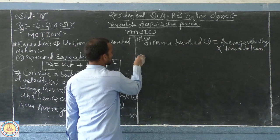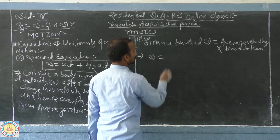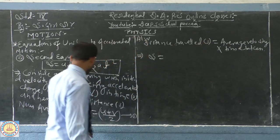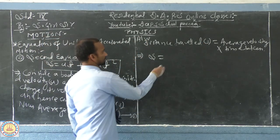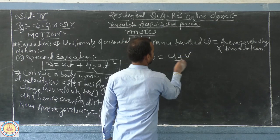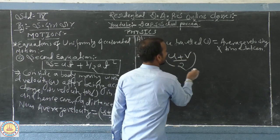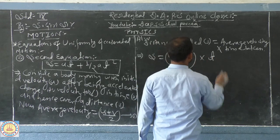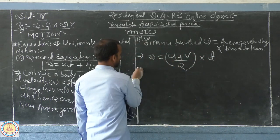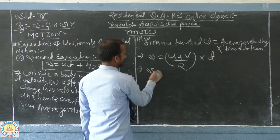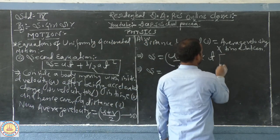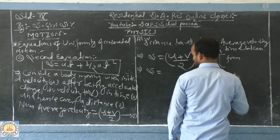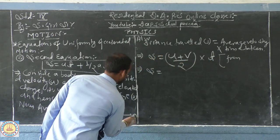So for this, you may mention that small s equal to, instead of average velocity, you may put from equation 1 into time t. You may write here from equation,